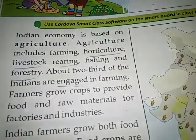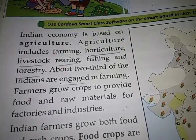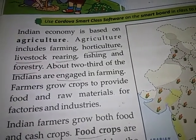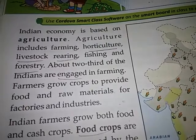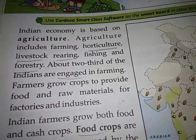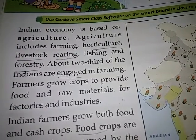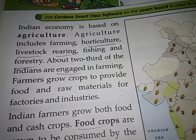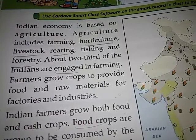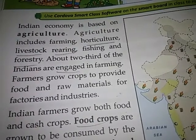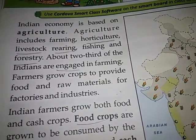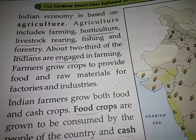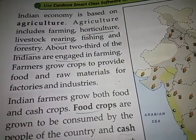Now let's start the chapter. Chapter number 14 - Our Agriculture. Indian economy is based on agriculture. Agriculture includes farming, horticulture, livestock rearing, fishing, and forestry. About two-thirds of the Indians are engaged in farming. Farmers grow crops to provide food and raw materials for factories and industries.